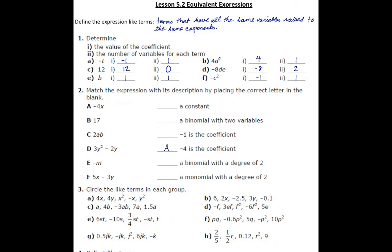Next, we've got 17. Of course, 17 doesn't have a variable in it, so this is a constant term. Next, we have 2AB. 2AB is a monomial with a degree of 2. The reason for that is that A is to the 1 and B is to the 1, so combined together that is degree 2, and it is a monomial because it's a single term.